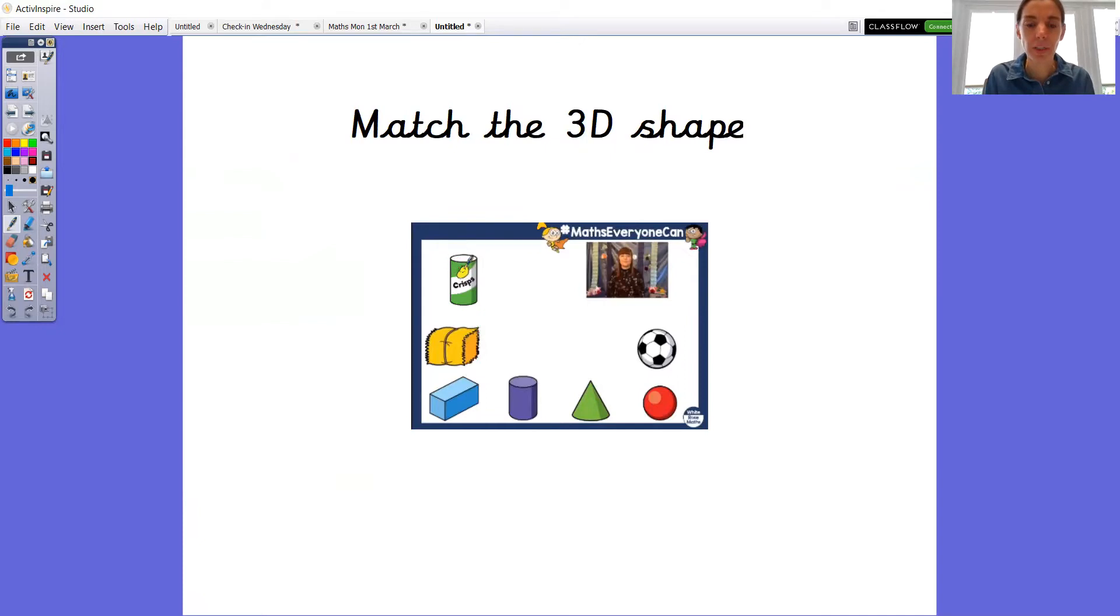All right, now this one at the top. Can you see where my pen is? You can circle it if that makes it easier. There we go. What shape? Well done if you said cylinder.